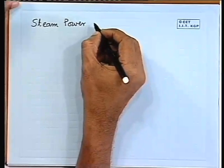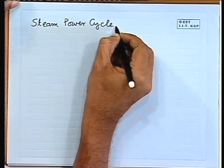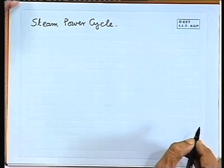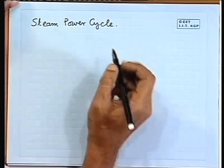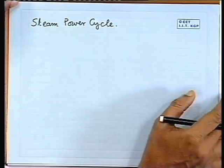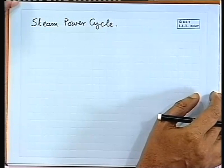Good evening. We were discussing steam power cycle. Steam power cycle is basically a heat engine cycle where steam is used as the working substance. The working fluid medium is steam. In part of the cycle it will be in the form of steam, and in part of the cycle it will be in the form of water.